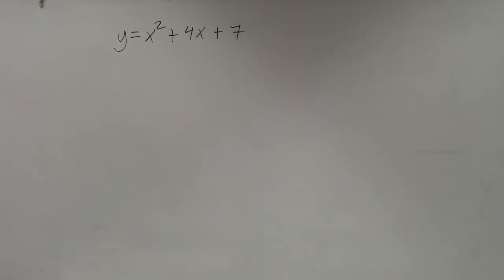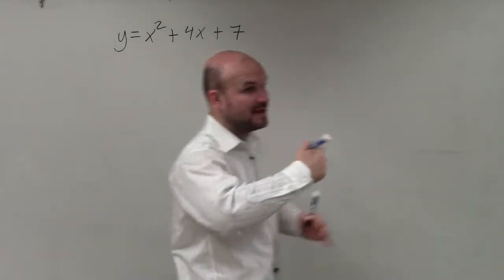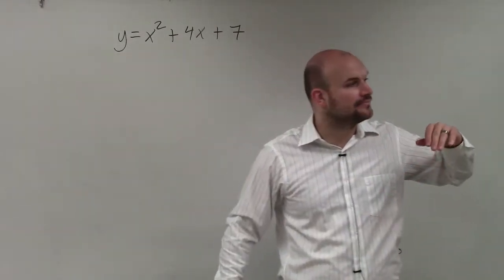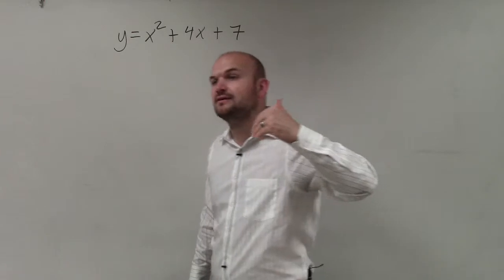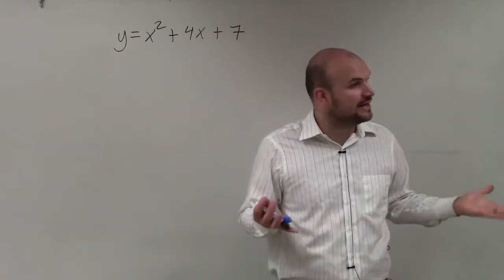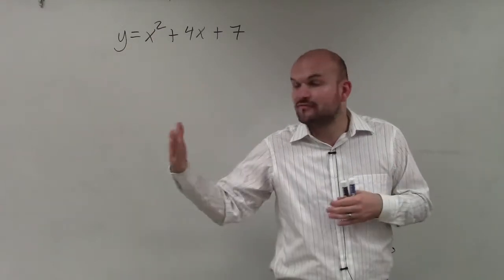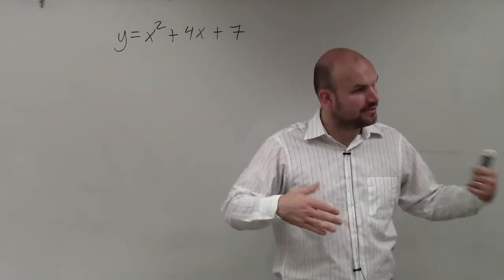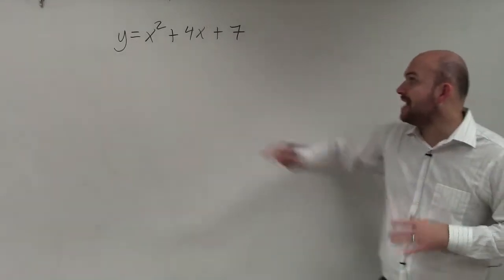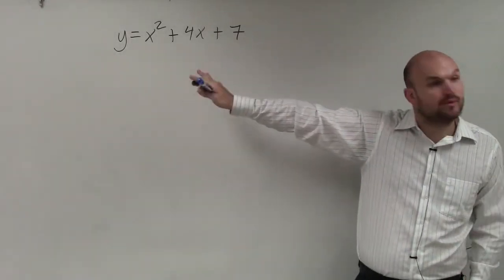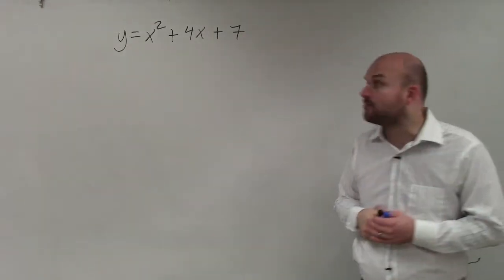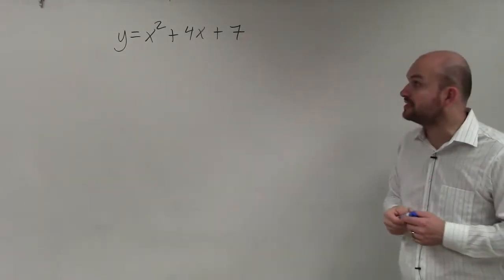Basically, ladies and gentlemen, what we are going to go over today: we've already talked about how to graph something in standard form, and we've already talked about how to graph in vertex form. So now what we're going to do is convert — being able to convert from standard form to vertex form. You should be able to graph in both formats. If we have an equation in standard form and we want to graph it in vertex form, we're going to follow a process called completing the square.